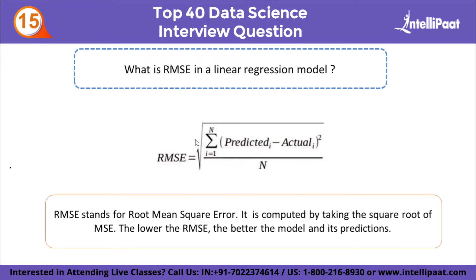What is RMSE in a linear regression model? RMSE stands for Root Mean Square Error, computed by taking the square root of MSE (Mean Square Error). RMSE measures the average magnitude of errors and is concerned with deviations from the actual value. An RMSE value of zero indicates a perfect fit. The lower the RMSE, the better the model. A higher RMSE indicates a large deviation from the residual to the ground truth. RMSE can be used with different features to determine if a feature is improving the model's predictions.